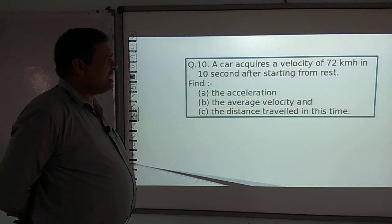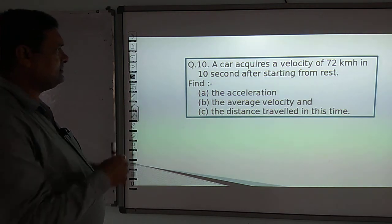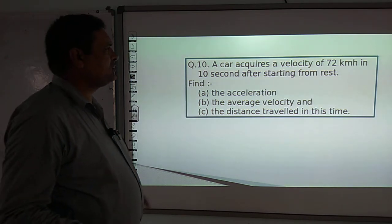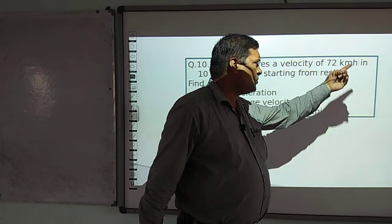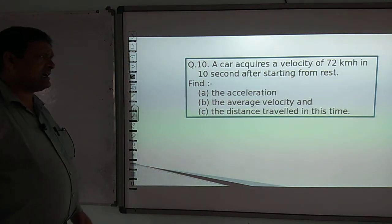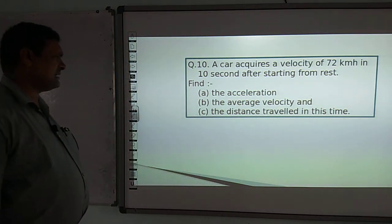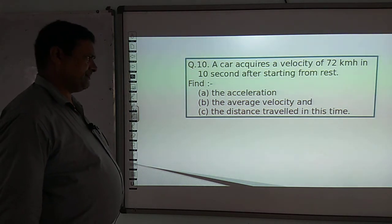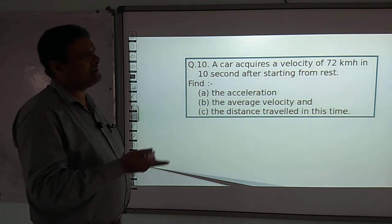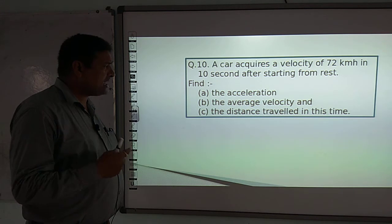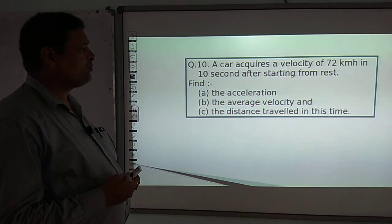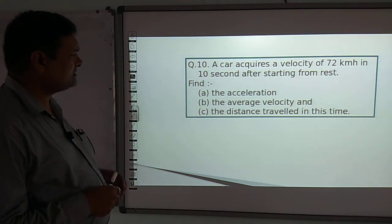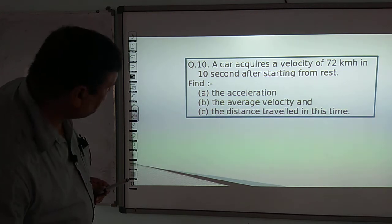So the question says the car starts from rest, and after 10 seconds its speed is 72 km per hour. At what rate does the car increase its velocity — that is, what is the acceleration? The second part asks for average velocity, and the third asks for the distance covered during this time. Now let's look at the solution.